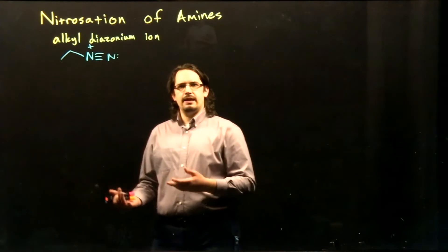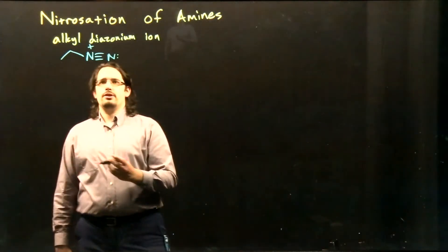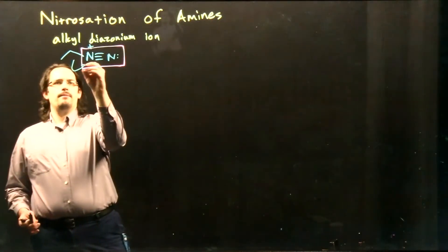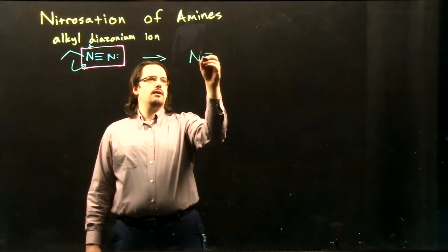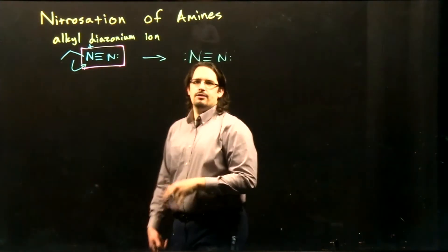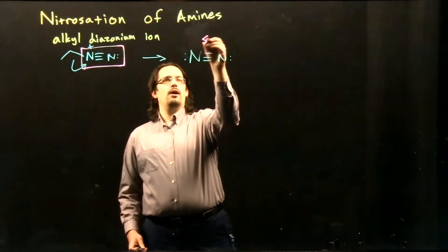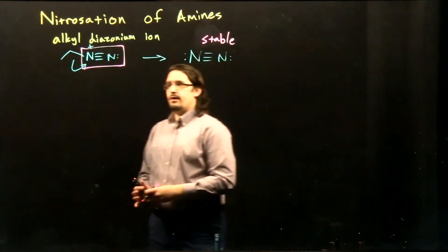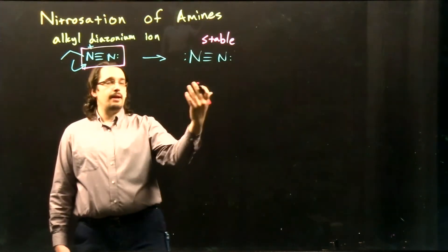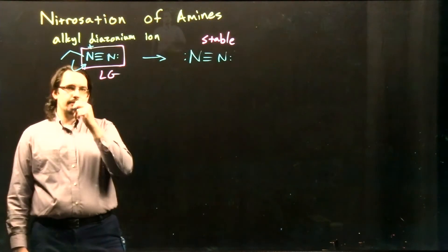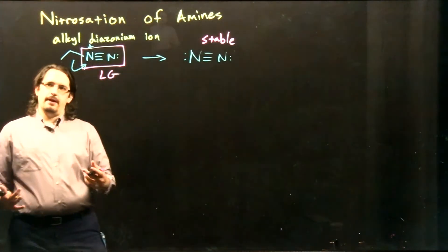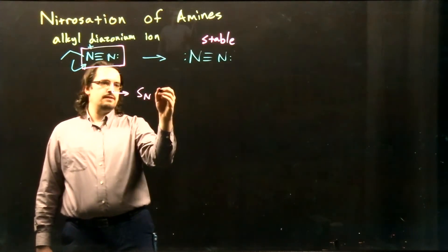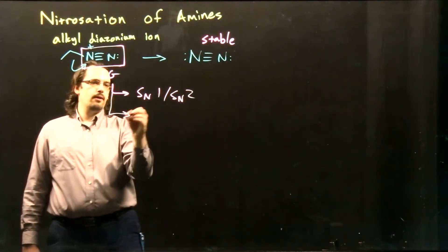The next question is: what do we actually gain from this alkyldiazonium ion? Looking at our structure, we have these two triply bonded nitrogens, and if we break this off we can create diatomic nitrogen gas, which is extremely stable due to its strong triple bond. Since the diazonium ion breaks off to form nitrogen gas, it is a very good leaving group. This opens up a whole set of reactions — good leaving groups can be used for SN1, SN2 substitution reactions as well as E1 and E2 elimination reactions.